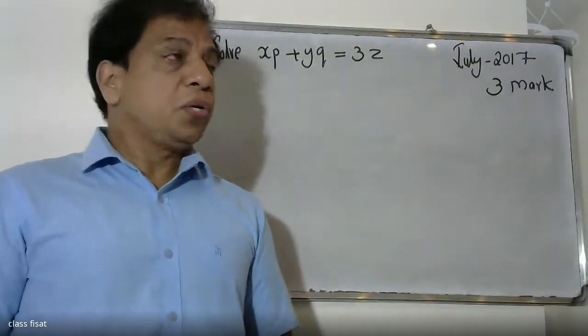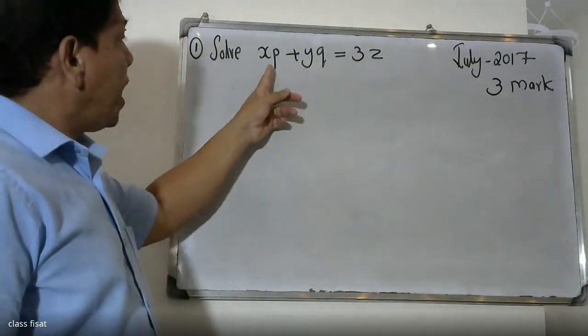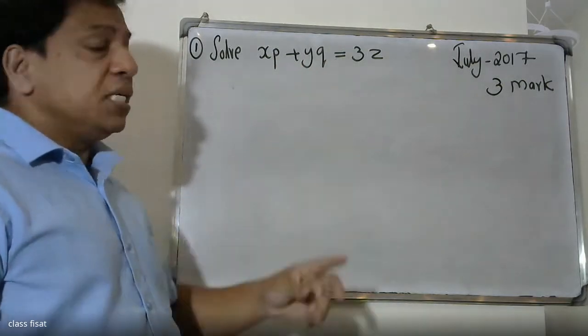Good morning, friends. At the university question: solve XP plus YQ equals 3Z.